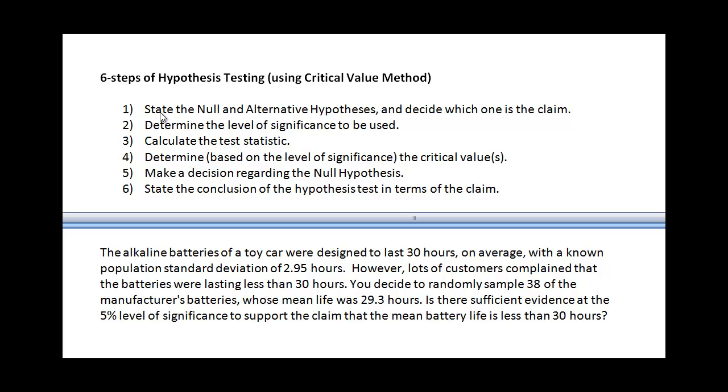And the question is, is there sufficient evidence at the 5% level of significance to support the claim that the mean battery life is actually less than 30? So walking through these six steps, the first thing you should do is to state the null and the alternative hypotheses. And then I suggest you decide which one is the claim. That's pretty important as well.